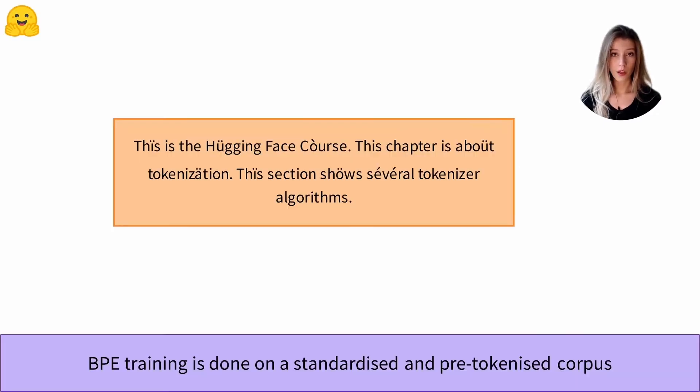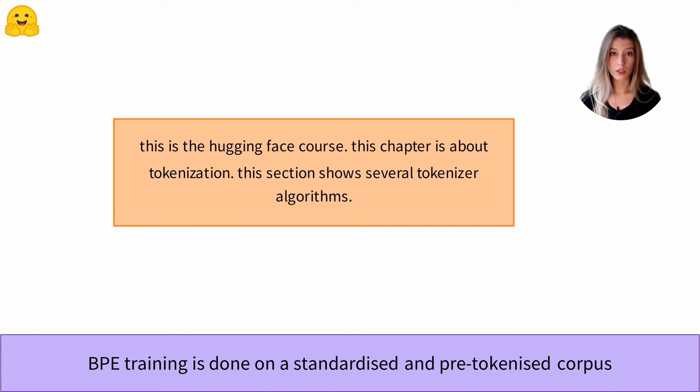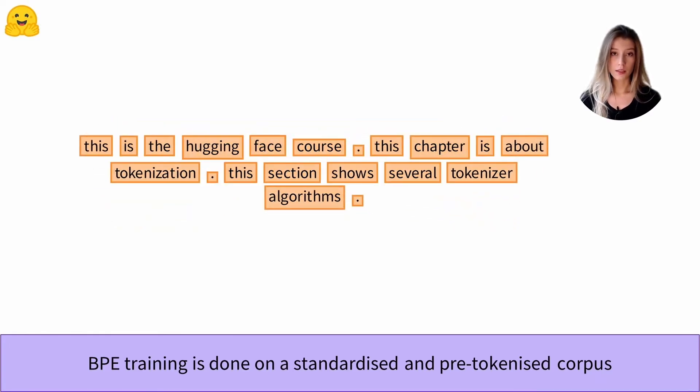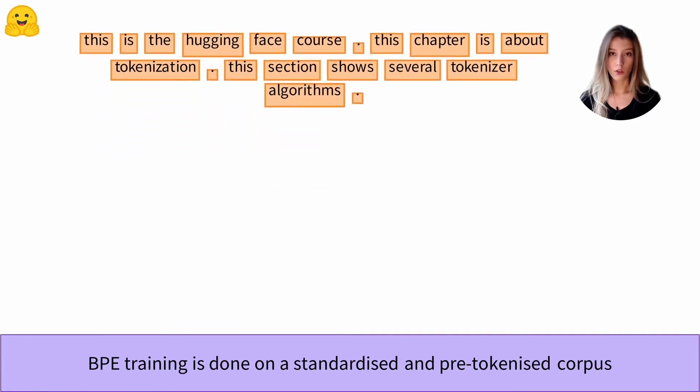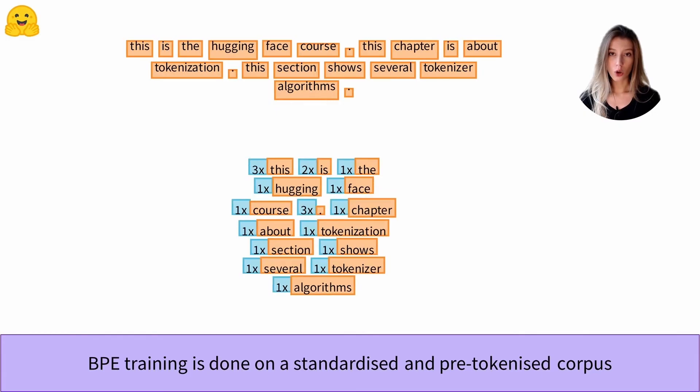First of all, we have to get a corpus of text. We will not train our tokenizer on this raw text, but we will first normalize it, then pre-tokenize it. As the pre-tokenization divides the text into a list of words, we can represent a corpus in another way by gathering together the same words and maintaining a counter.